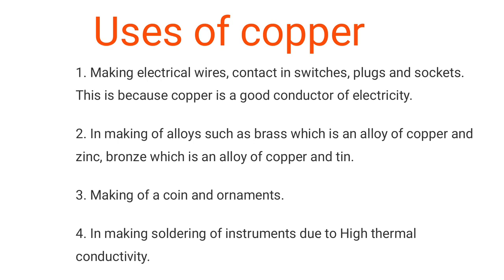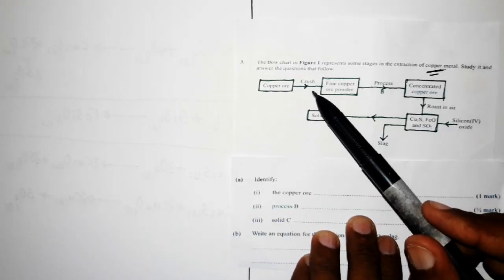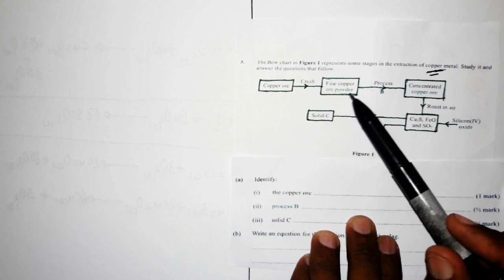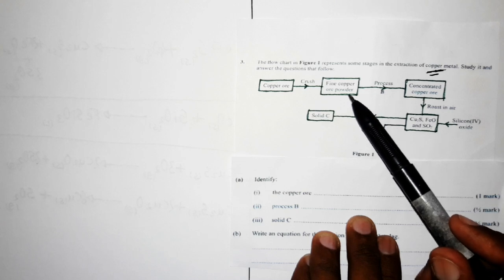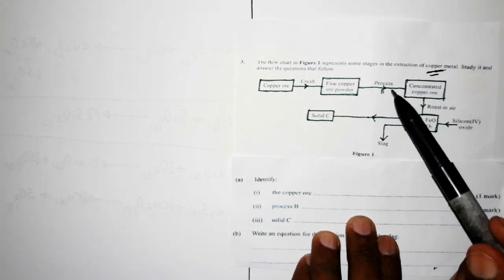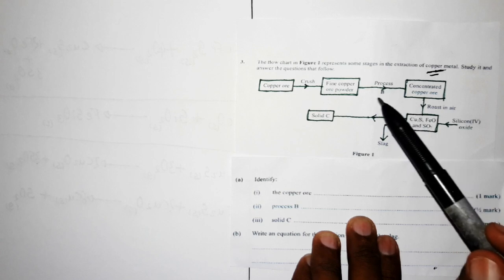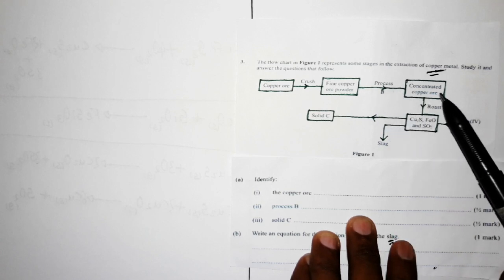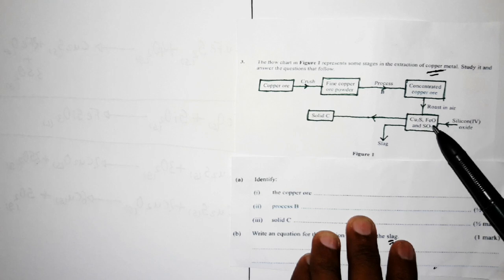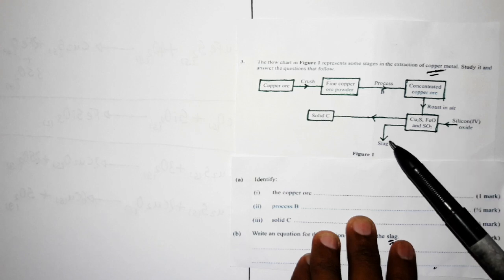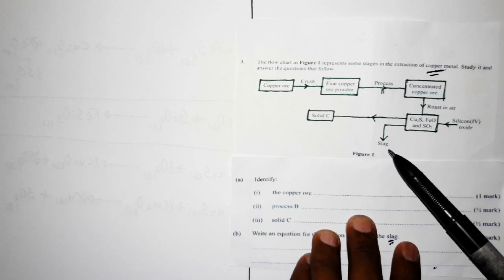Let us now answer the exam question based on the flowchart. The copper ore here is copper pyrite. Crushing is done to increase surface area for extraction. Then there is fine powder. Process B is froth flotation — its aim is to remove impurities. The concentrated copper ore is then roasted in air to obtain three products: copper one sulfide, iron two oxide, and sulfur four oxide. Silicon dioxide is then pumped in and reacts with iron two oxide to form slag, whose chemical name is iron two silicate.